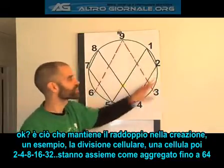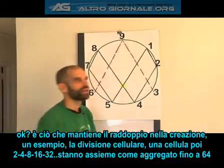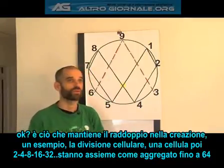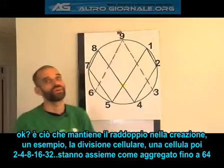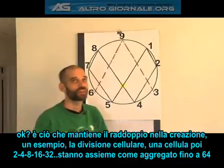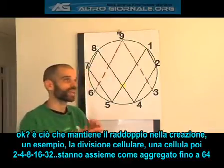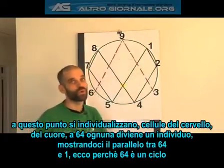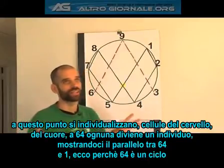It's what keeps creation doubling. What are examples of doubling? We could take cell division. You can see you have one cell which becomes two, four, eight, sixteen, thirty-two cells. They stay all together as an aggregate until they reach 64. At 64, all the cells become individualized.